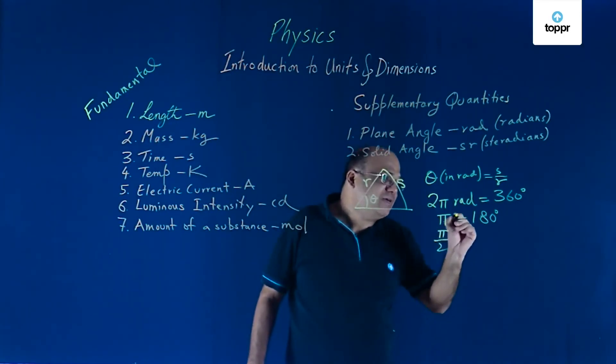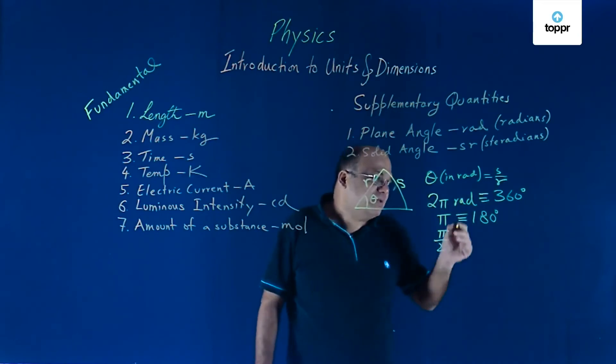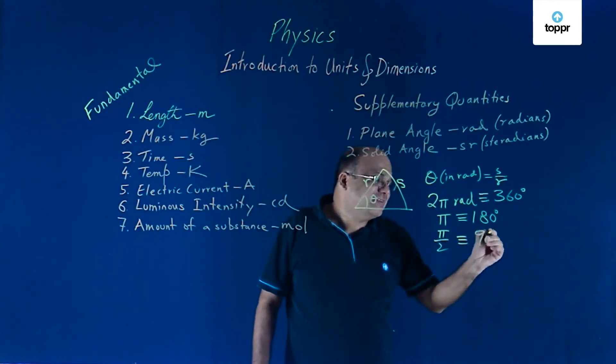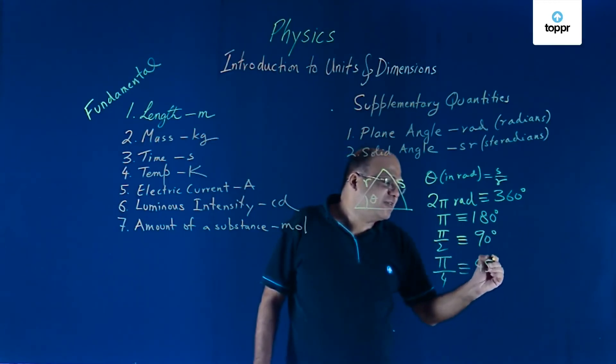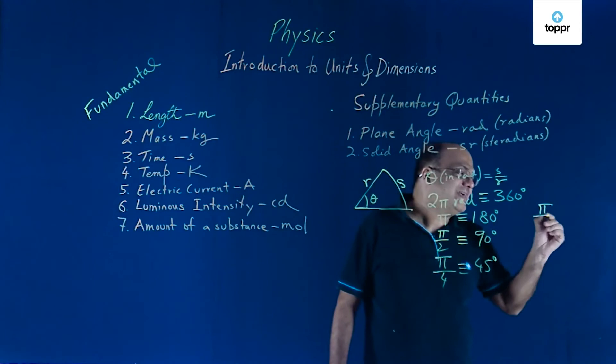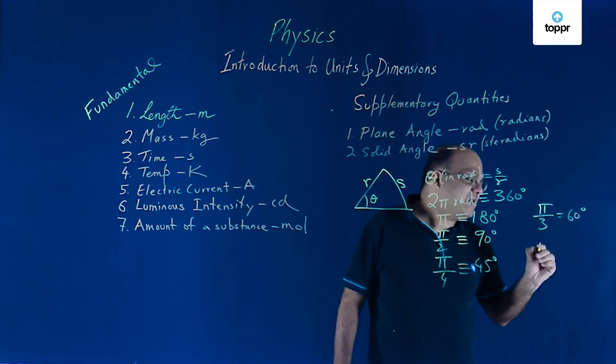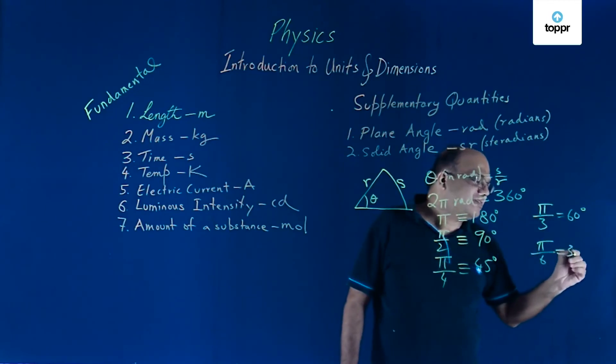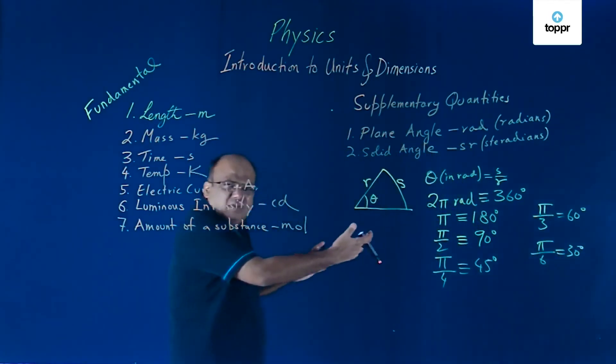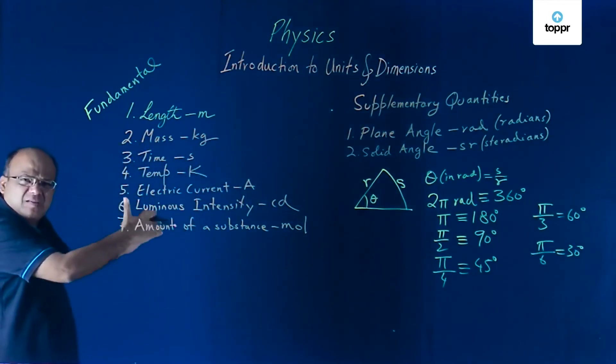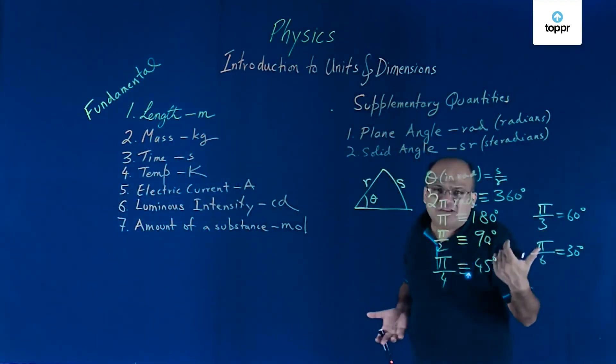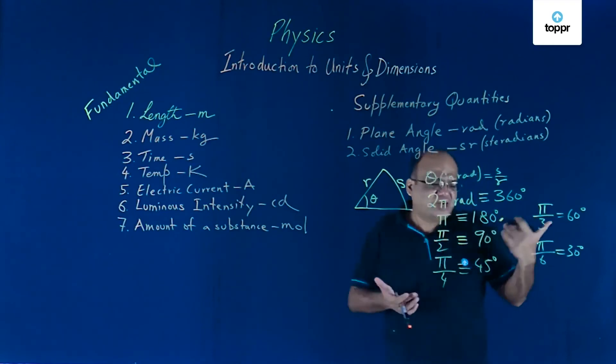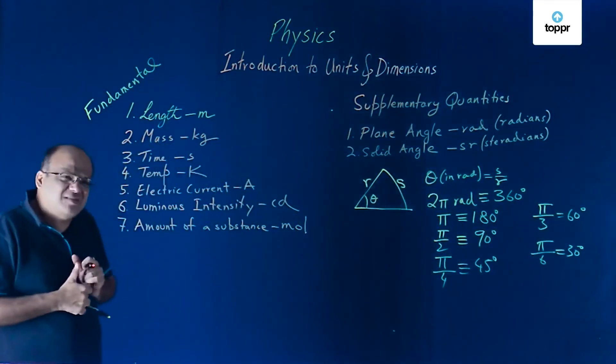So, pi is 180. Pi by 2 radians will be? That is the equivalent sign. You can draw this sign that is equivalent. Pi by 2 radians is 90 degrees. Pi by 4 radians will be 45 degrees. Pi by 3 radians will be 60 degrees. Pi by 6 radians will be 30 degrees. So, this is what you have to get used to now. 2 pi is 360. Pi is 180. Pi by 2 is 90. Pi by 4 is 45 degrees. Pi by 3 is 60 degrees. Pi by 6 is 30 degrees. That is called radial measure of an angle.